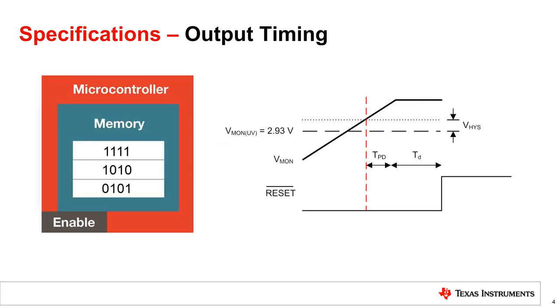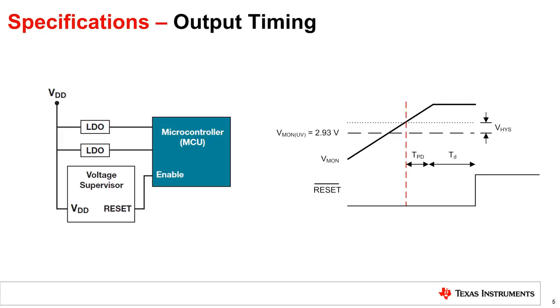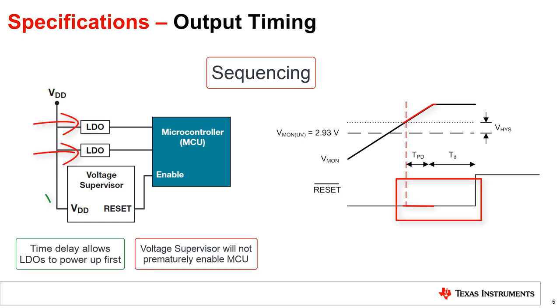An example of why reset time delay is important is if the supervisor were monitoring an MCU. By holding the reset low after Vmon crosses its positive going threshold voltage, the reset time delay guarantees that the MCU has enough time to clear its memory bank before starting up. Another example of why reset time delay is important is if there are multiple voltage rails in the system that need to be powered up in a sequence. A supervisor with a reset time delay can be used to ensure one voltage rail powers up after all the other voltage rails are powered up.